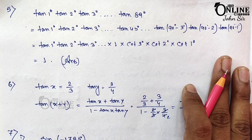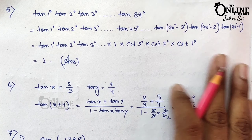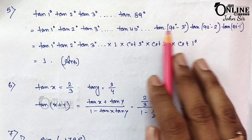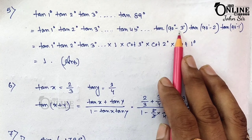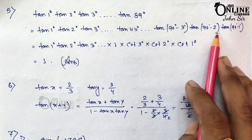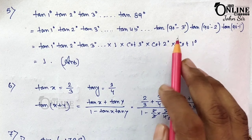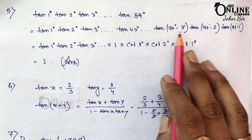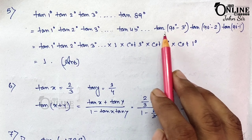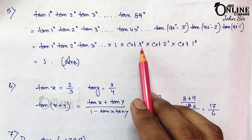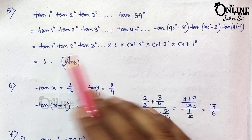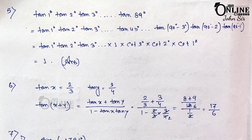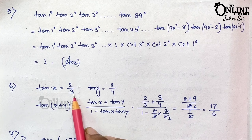Problem 5: Find the value of tan1°·tan2°·tan3°···tan89°. Notice that tan87° = tan(90°−3°) = cot3°, tan88° = cot2°, tan89° = cot1°. Since tan and cot are reciprocals of each other, every pair cancels. Also tan45° = 1. So the entire product equals 1.